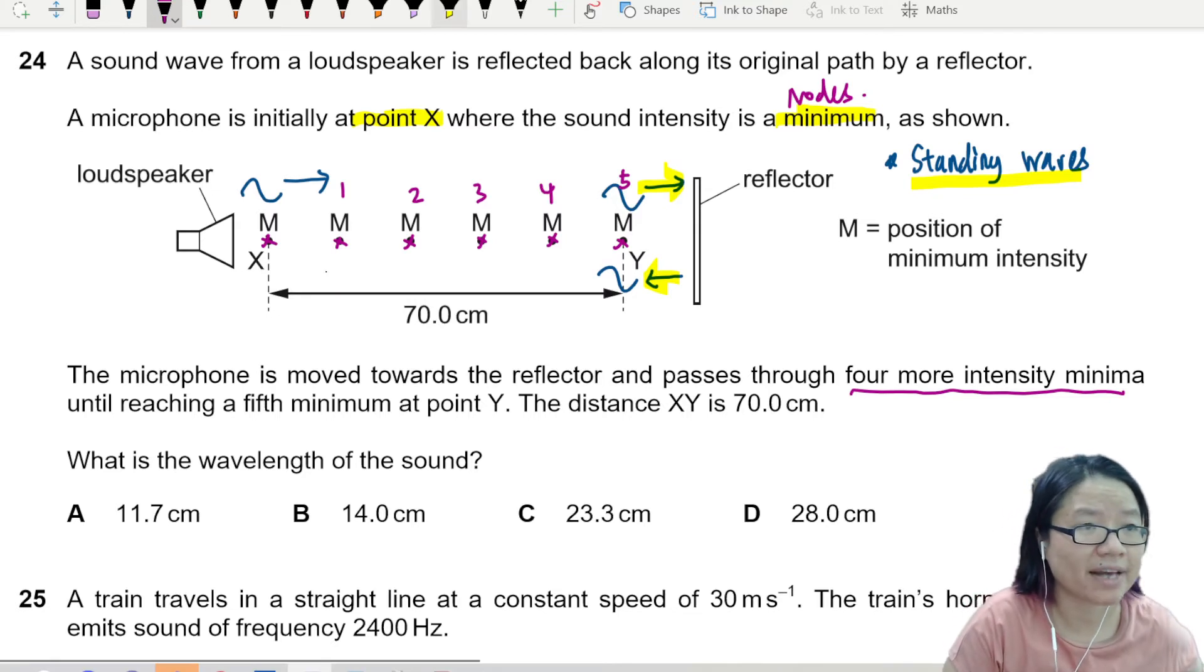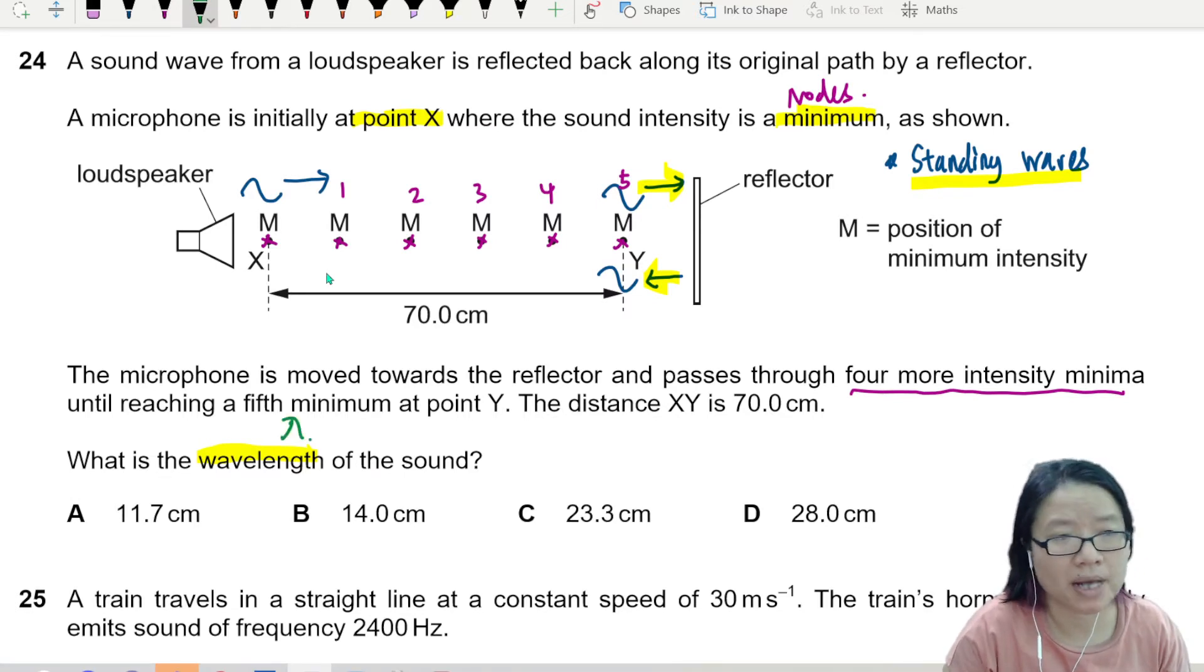What is the wavelength of the sound? Lambda. So to find lambda means I need to be able to draw my wave profile, my wave shape. So if I think about all of this as minimum, my wave will look like this. This is minimum, minimum, minimum, minimum.